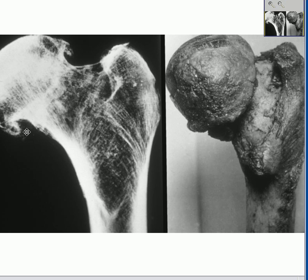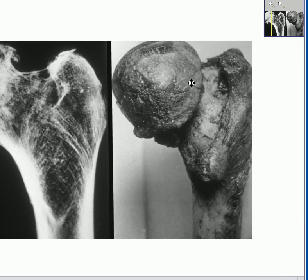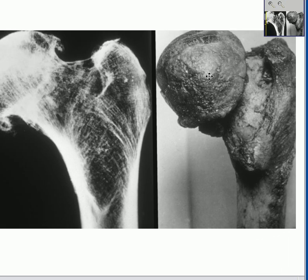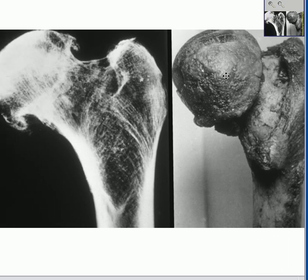On the X-ray, you can see that the cartilaginous surface has a little bit of a lip on it. These prominent lips are called osteophytes — here you see an osteophyte radiologically, and here you see osteophytes on the gross specimen of the bone. So the three questions raised in this slide are hopefully now answered. Thank you very much.